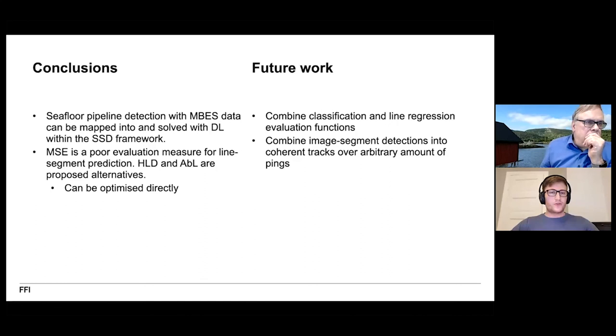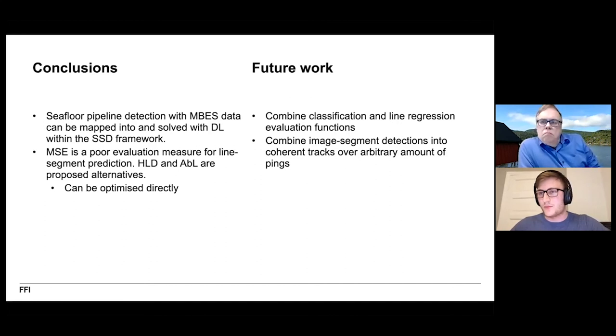For a quick conclusion and future work, we showed that this dataset that we have of 15 seafloor pipeline inspection missions within the framework of this label format and the labels that we propose, and within the deep learning framework, that these models are able to solve this task relatively well. Additionally, we showed that the mean squared error is a poor evaluation measure for measuring line similarity and we propose to instead use the Hausdorff line distance or the area between lines. And interestingly, we also showed that these are differentiable almost everywhere so we can also optimize them directly.